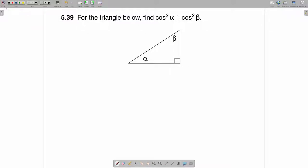For the triangle below, find cosine squared alpha plus cosine squared beta. This is a right triangle, and it has a 90 degree angle, an alpha, and a beta degree angle.